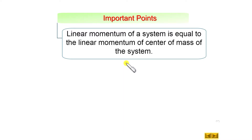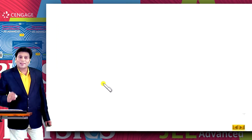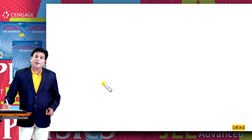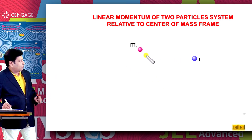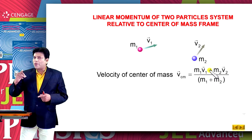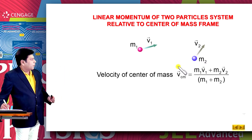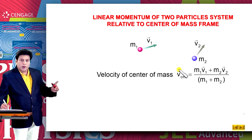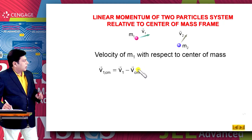One more important point: neither internal forces nor external forces can change the linear momentum of the system relative to the center of mass. Let us calculate the linear momentum of a two-particle system relative to the center of mass frame. We have two particles m1 and m2 moving with velocities v1 and v2. The velocity of the center of mass is v_cm = (m1·v1 + m2·v2) / (m1 + m2). The velocity of particle 1 with respect to the center of mass is v1_cm = v1 − v_cm.